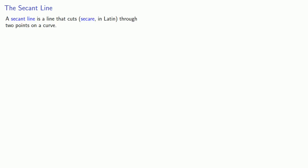A secant line is a line that cuts (secare in Latin) through two points on a curve. Since we know how to write the equation of a line given two points, we can always write the equation of the secant line.